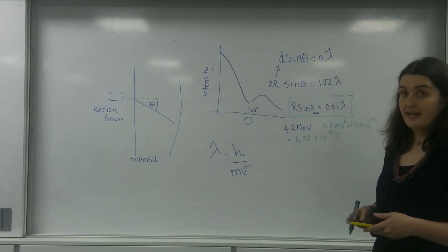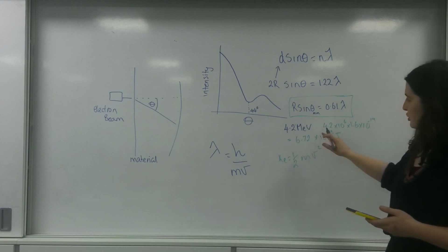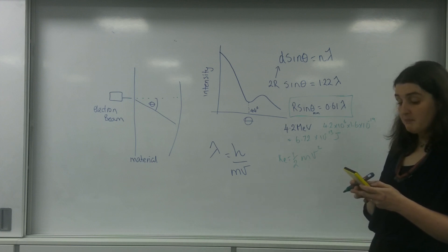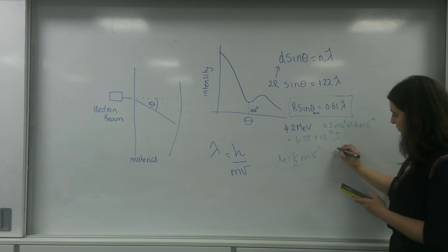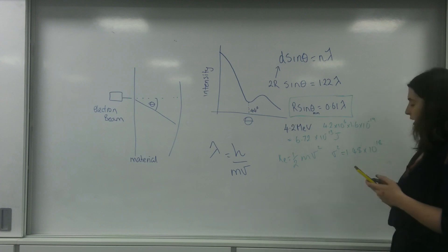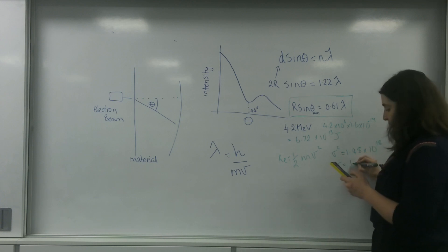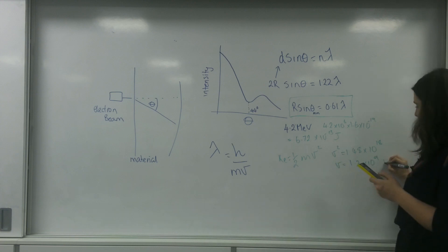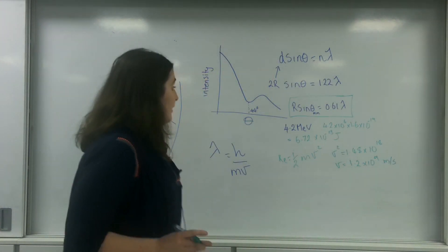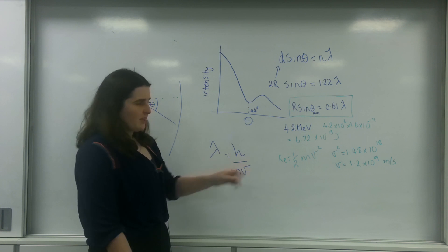That equals ½mv², so I times by 2 and divide by the mass of an electron (9.11 × 10⁻³¹). I get v² = 1.48 × 10¹⁸, and square-rooting gives v = 1.2 × 10⁹ m/s. I'm aware this is breaking the laws of physics — I was just plucking numbers out of my head — but I'm going to go with it and see what result we get. I do apologize for that.